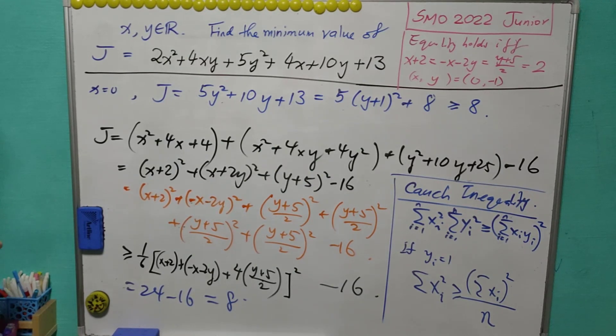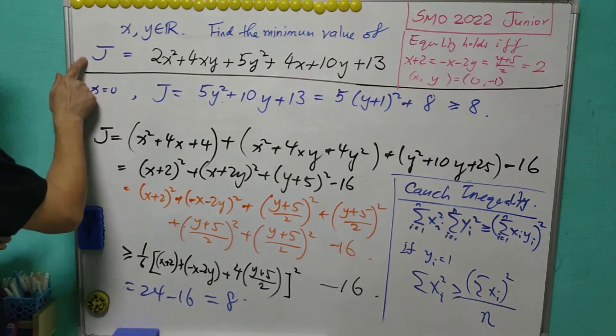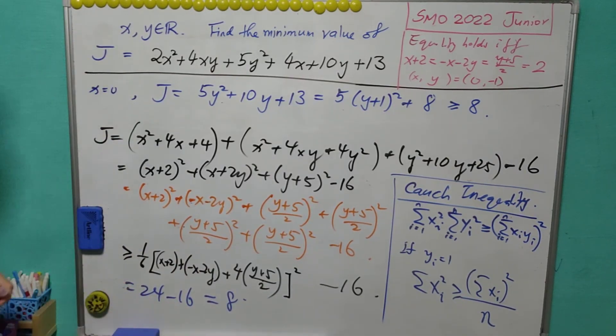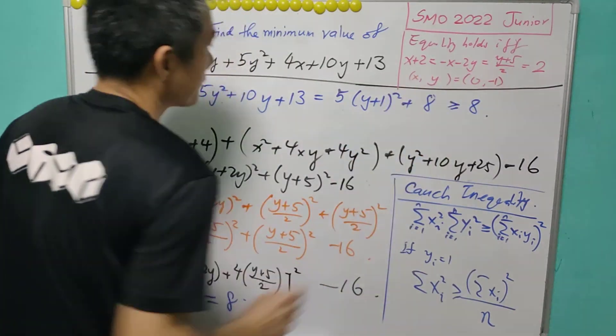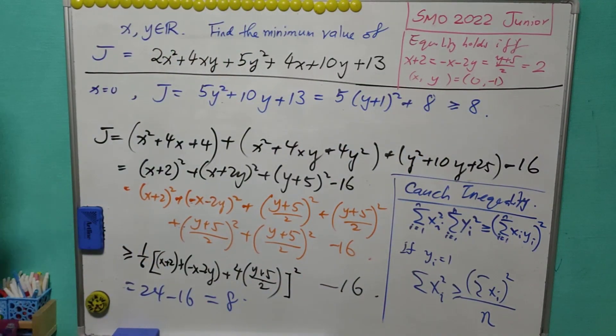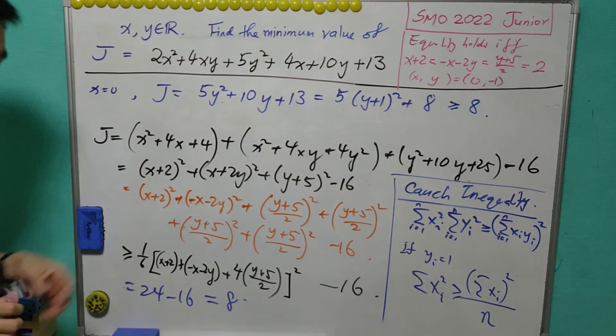So in conclusion, the minimum value of J is equals to 8. And it occurs when x, y equals to 0, negative 1. That's all for today's lesson. I'll see you again next time. Bye-bye.